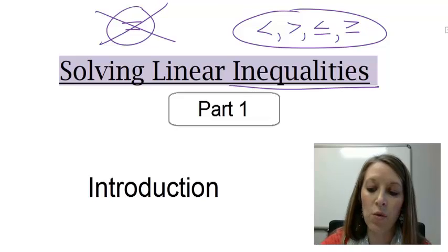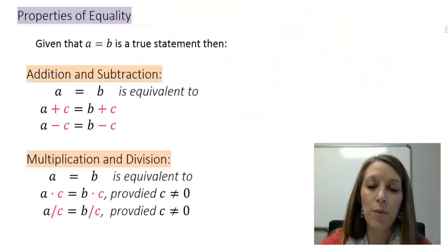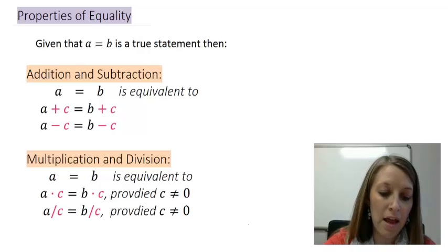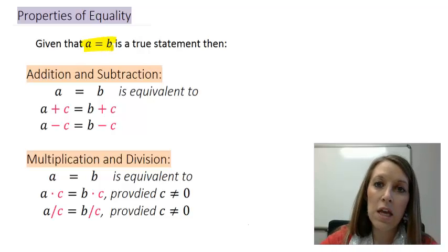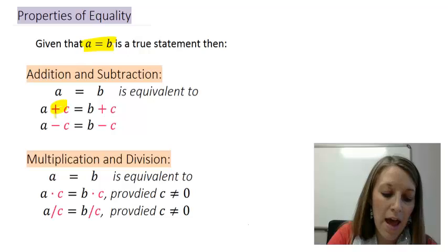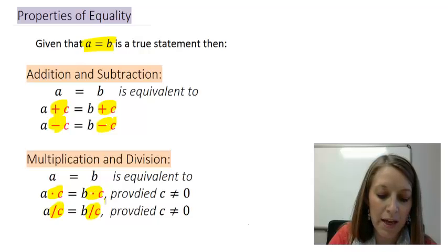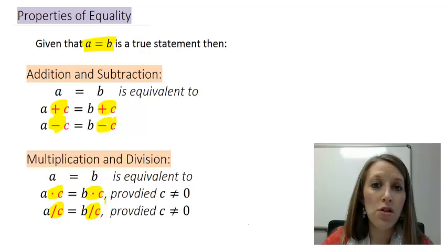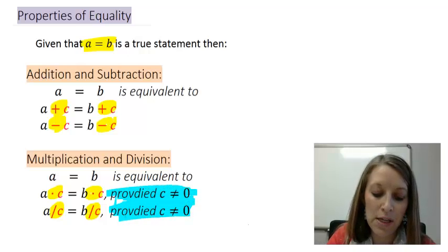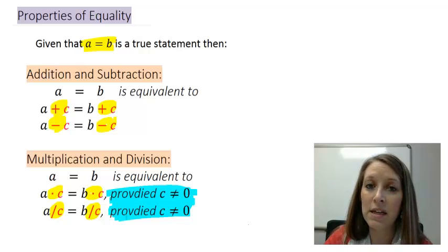First, we need to review the properties of equality that we use when solving equations. Basically, if we start out with a true equation, we can do anything to it as long as we do it to both sides. We can add or subtract something to both sides, and we can multiply or divide something to both sides, and that keeps our equation balanced. The one extra stipulation is that we cannot multiply or divide both sides by zero, because that either doesn't gain us any ground or gives us an undefined statement.